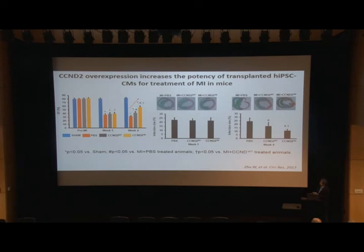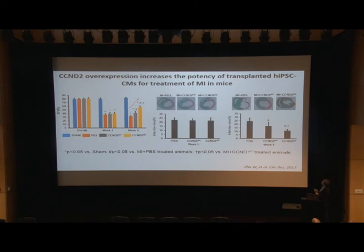We used fast green, which represents muscle, and sirius red, which represents fibrotic scar tissue. At one week, all MI animals showed a similar level of sirius red signal. By four weeks, in the MI plus PBS group, the wild-type cell injection group, and the Cyclin D2 cell injection group, it appears that muscle is actually growing in the scar area. Accordingly, we quantified infarct size, and the infarct size was decreased in animals receiving the Cyclin D2 cell injection.